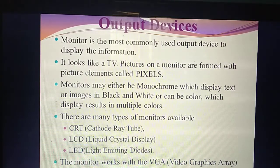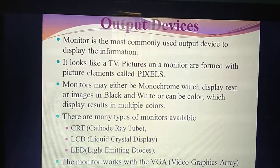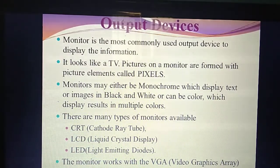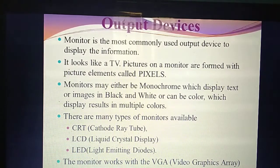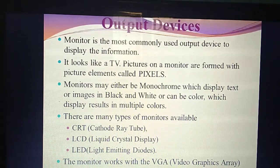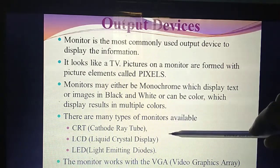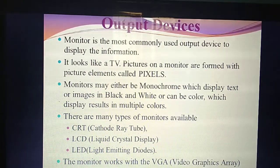The first output device you studied is monitor — a display device used to display information on the screen. Pictures on the monitor are formed using pixels. Monitors may be monochrome — displaying in black and white or colors. There are three types: CRT — Cathode Ray Tube, LCD — Liquid Crystal Display, and LED — Light Emitting Diodes. All these monitors use a VGA card — Video Graphics Array card — which acts as intermediate between input devices and the monitor. The first computer monitor was devised by XEROX Alto Computer System on March 1st, 1973.